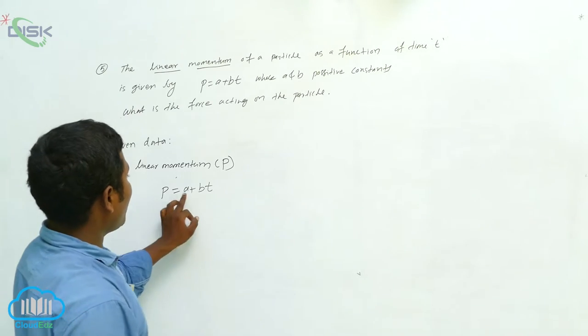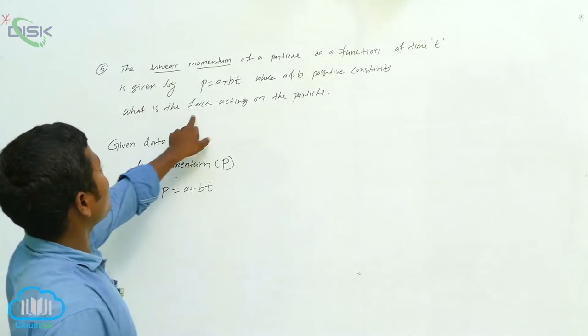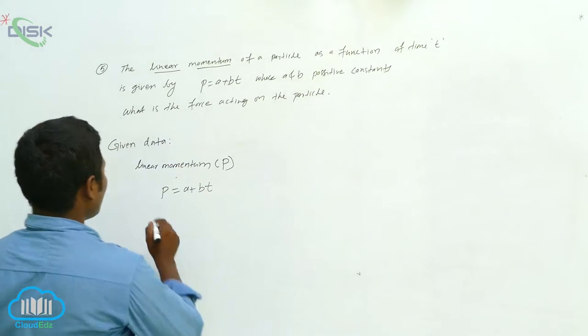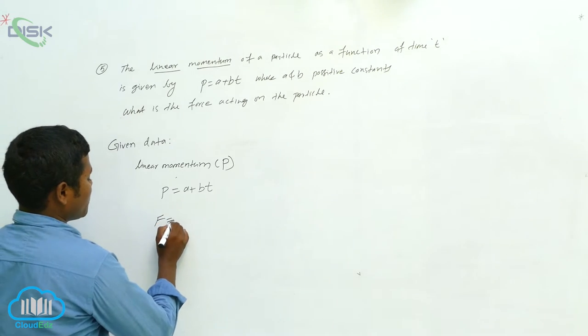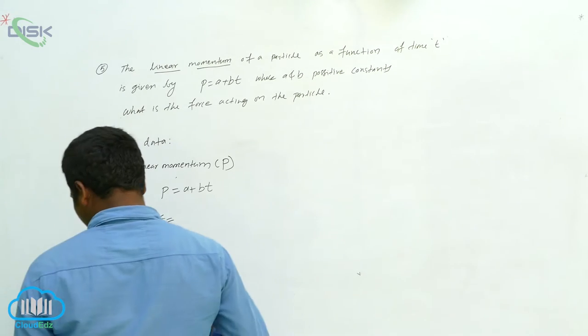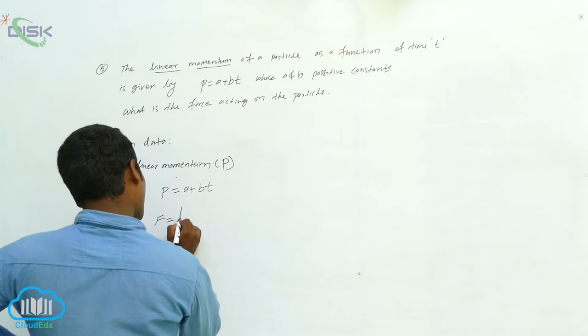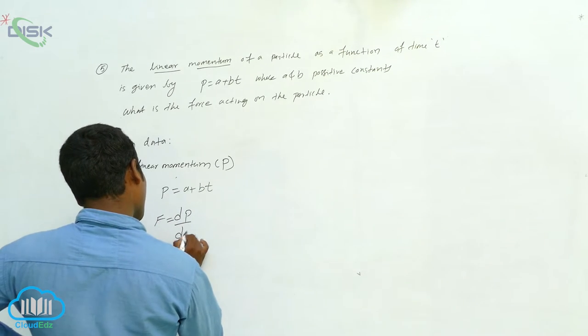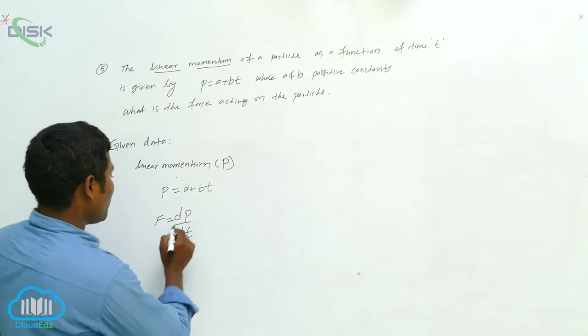Okay, where a and b are positive constants. What is the force acting on the particle? Then what is the formula? F equals, then what we can write: F equals dp/dt. So p, how much is there?